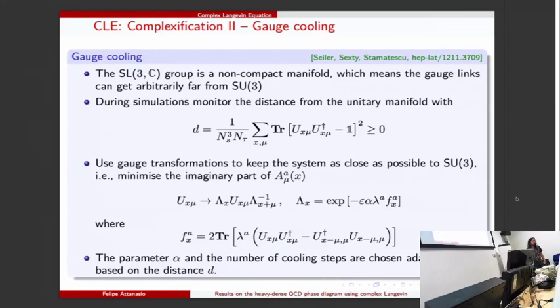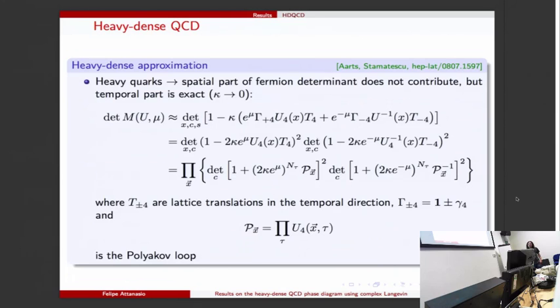Now about the algorithm. We simulated using the heavy quark approximation. This is the quark determinant written in almost its full glory if you ignore the spatial parts of the fermion determinant. We do things exactly - we still have the determinant in terms of space-time indices, color indices, and spin indices. After you do the space-time determinant you get this product over the spatial position and the determinant can be written in terms of the Polyakov loop given here.